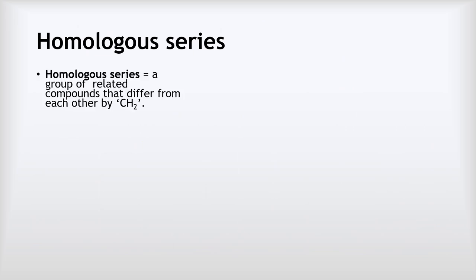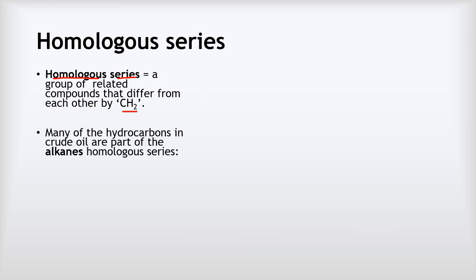Now, homologous series. A homologous series is a group of related compounds that differ from each other just by the numbers of CH2 units they contain. That might sound a bit strange for now, but we're going to work through an example in a second. What we find is that many of the hydrocarbons in crude oil are part of the alkanes homologous series, which we're going to meet now.